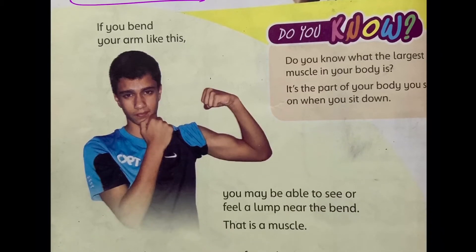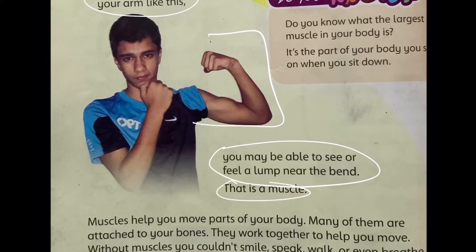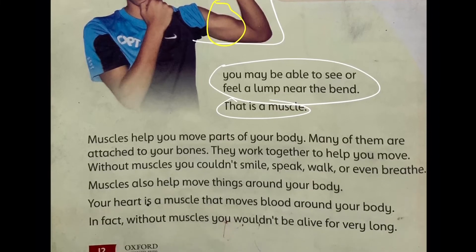If you bend your arm like this, you will feel that there is a lump near the band. That's the muscle. I will highlight you in this picture — that's a muscle, right? Because this guy has bent his hand and there is a lump on his arm, and that's the muscle.